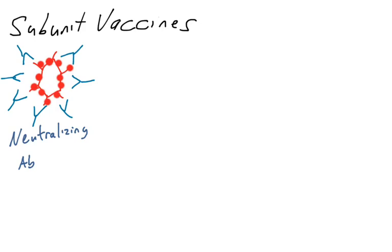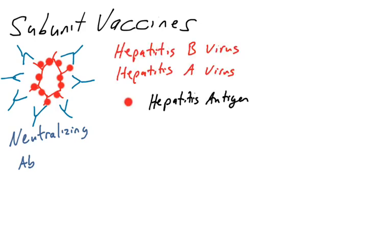The pathogen would be bound up with antibody, it would be neutralized, it might be opsonized as well. So how to generate neutralizing antibodies? One way is to inject individuals with just the antigen that is found on the surface of a pathogen.